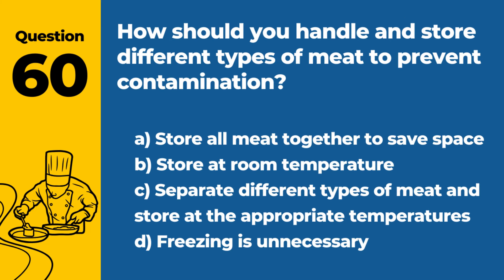Question 60. How should you handle and store different types of meat to prevent contamination? a. Store all meat together to save space. b. Store at room temperature. c. Separate different types of meat and store at the appropriate temperatures. d. Freezing is unnecessary. Answer c. Separate different types of meat and store at the appropriate temperatures. Different types of meat should be stored separately to prevent cross-contamination and at the appropriate temperatures to maintain safety and quality.